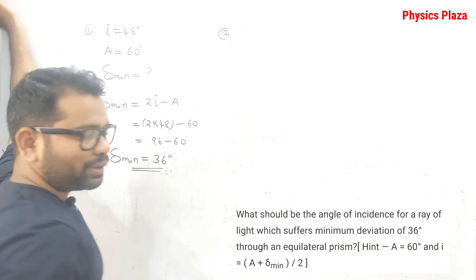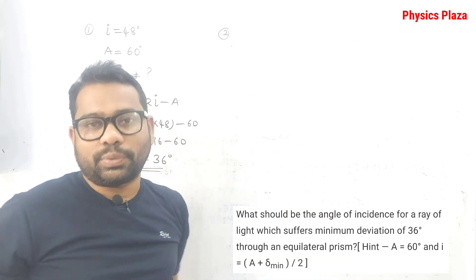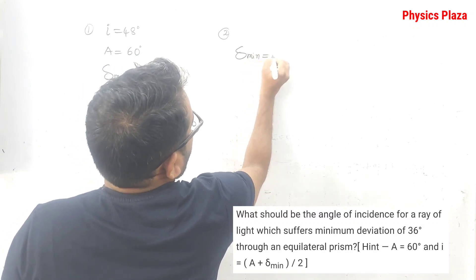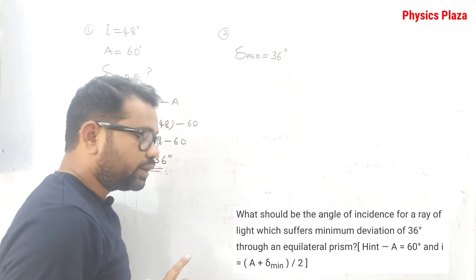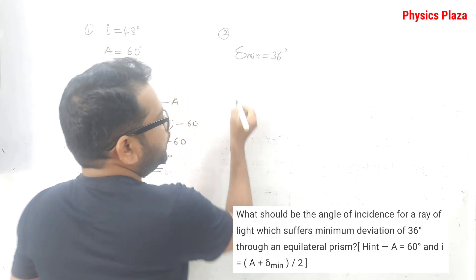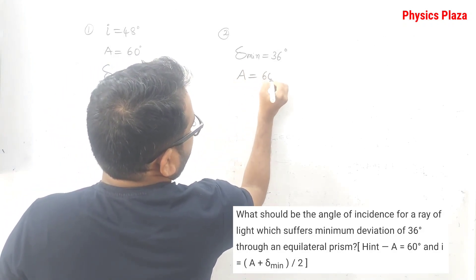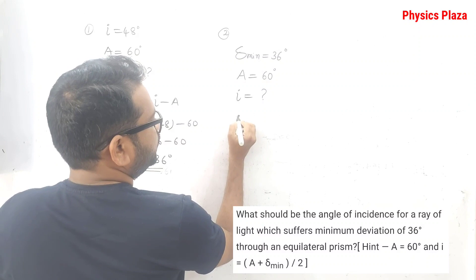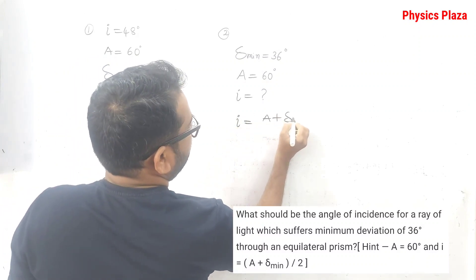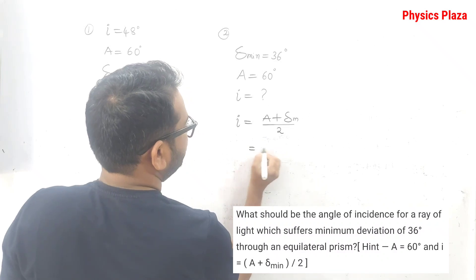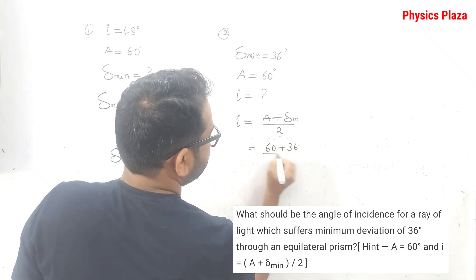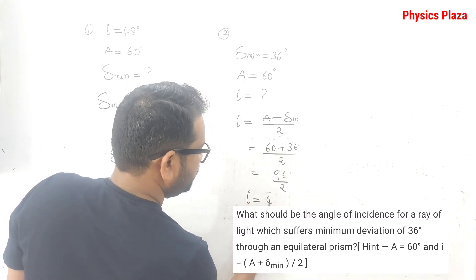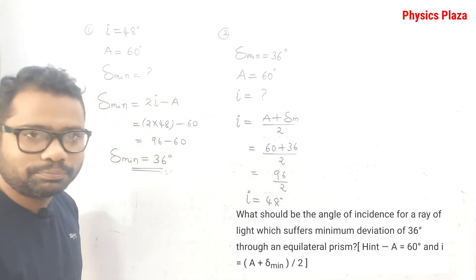The second numerical is the opposite of the first. Here the minimum angle of deviation is given as 36 degrees, and we have an equilateral prism, so the angle of the prism A = 60 degrees. They ask us to calculate the angle of incidence. Using i = (A + δ_m) / 2 = (60 + 36) / 2 = 96/2 = 48 degrees.